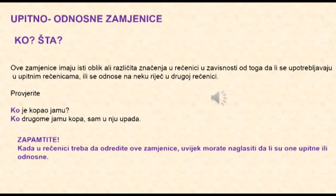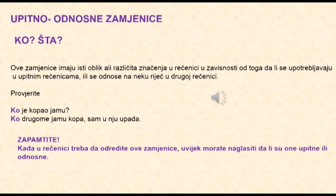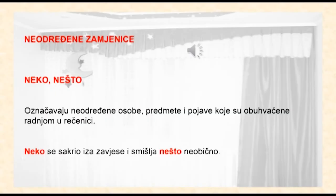Upitno-odnosne zamjenice imaju isti oblik, ali različita značenja u rečenici, u zavisnosti od toga da li se upotrebljavaju u upitnim rečenicama ili se odnose na neku riječ u drugoj rečenici. Zapamtite: kada u rečenici treba da odredite ove zamjenice, uvijek morate naglasiti da li su one upitne ili odnosne. Na primjer: Neko se sakrio iza zavjese i smišlja nešto neobično.